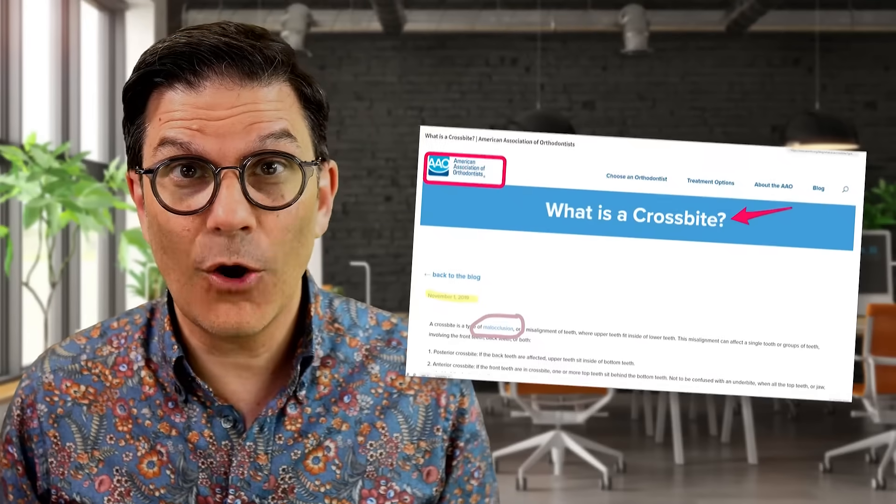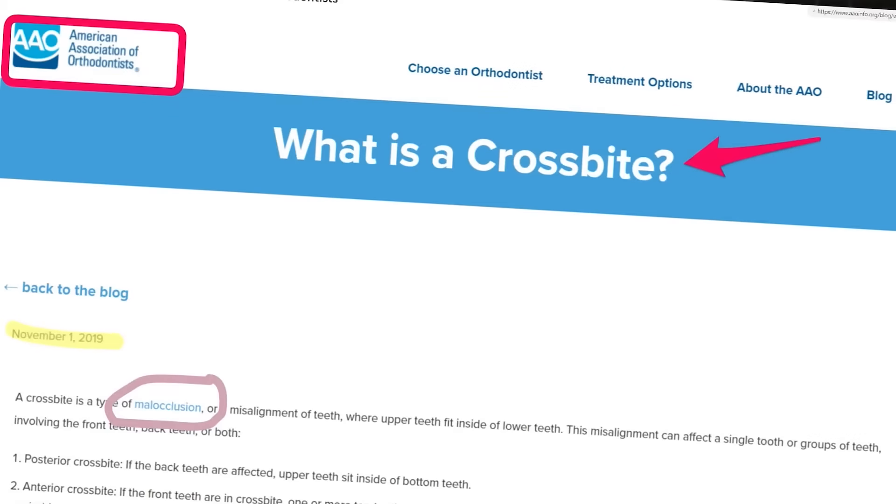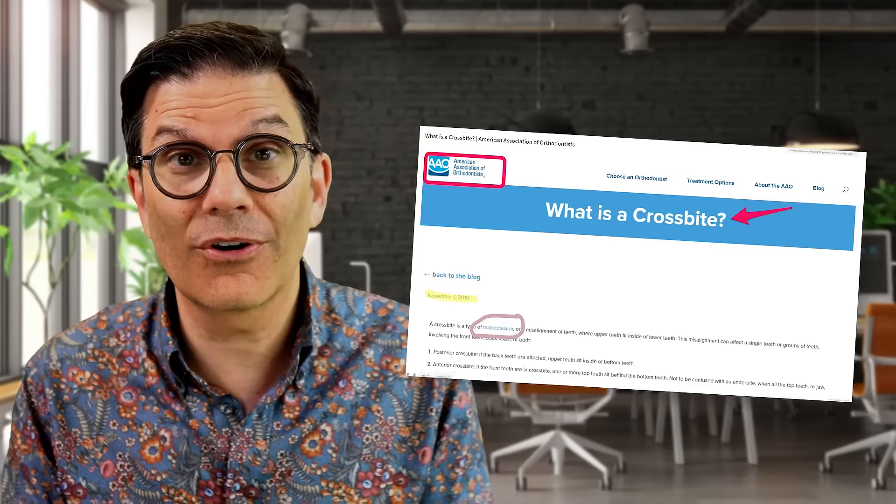What is a crossbite? According to the AAO, the American Association of Orthodontists, a crossbite is a type of malocclusion where the upper teeth fit inside the lower teeth, and this can affect a single tooth or a group of teeth. It can involve the front teeth, the back teeth, or a combination of both. You have posterior crossbites, when the upper teeth are occluding inside the lower teeth, and anterior crossbites, when the anterior teeth sit behind the lower teeth.